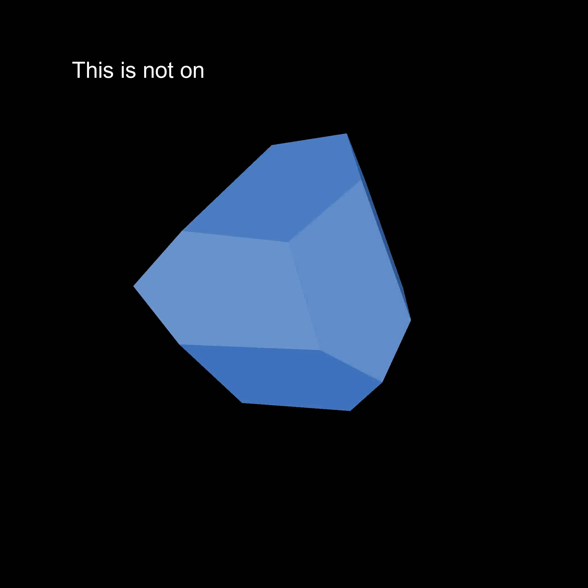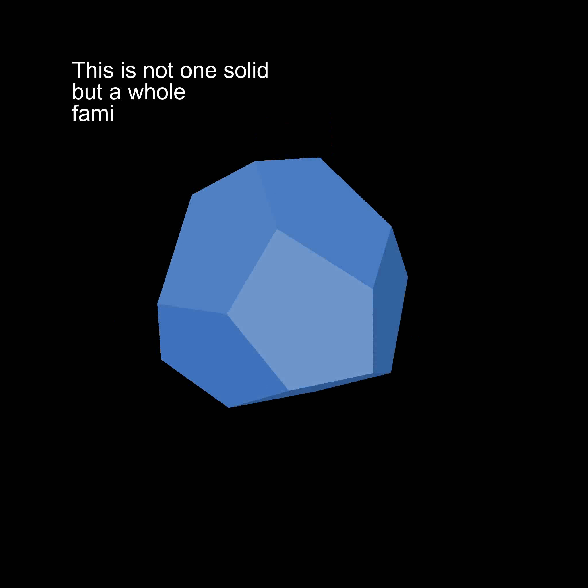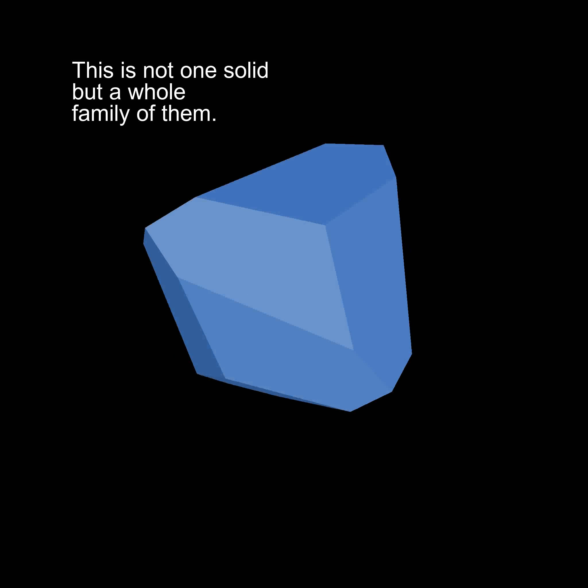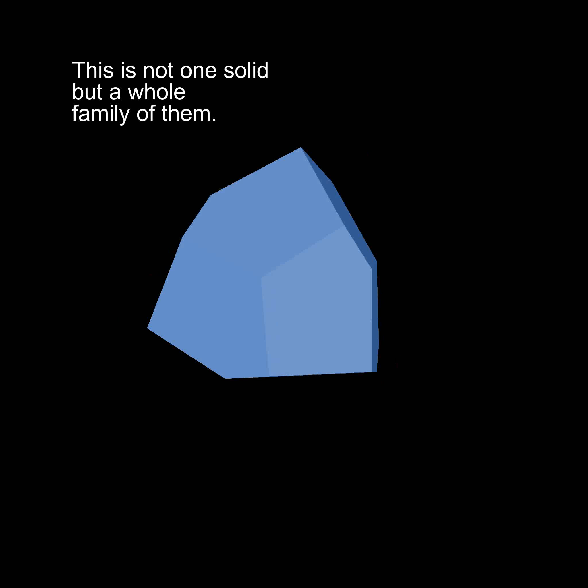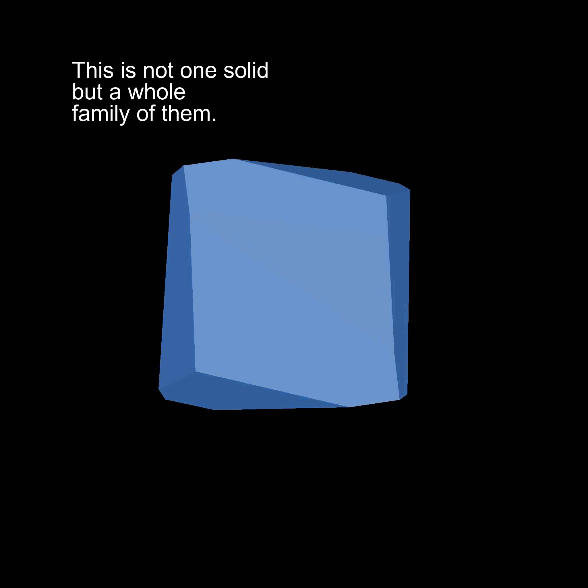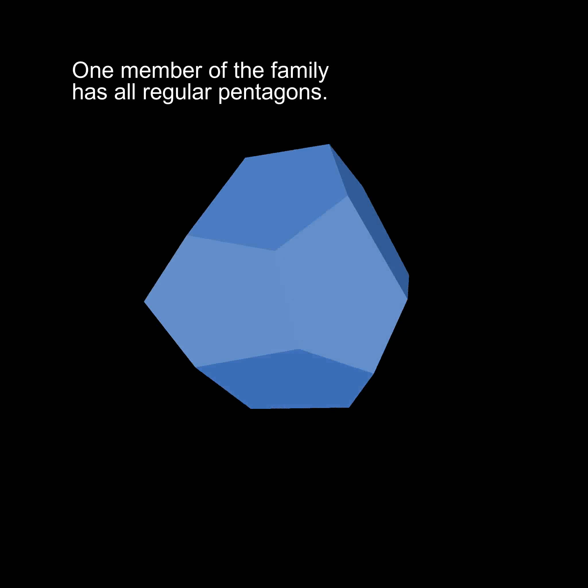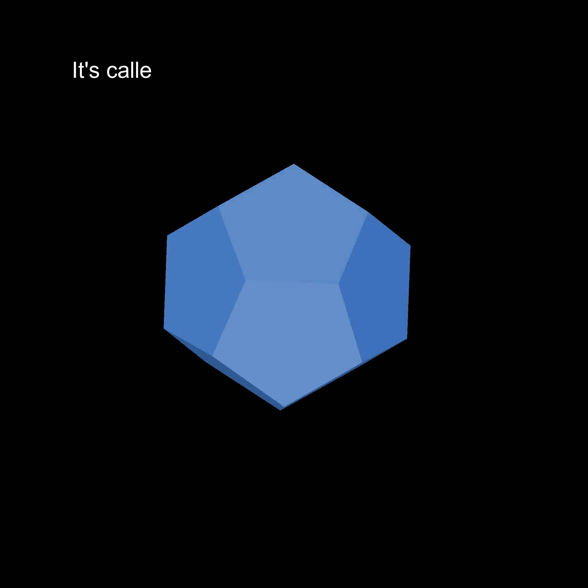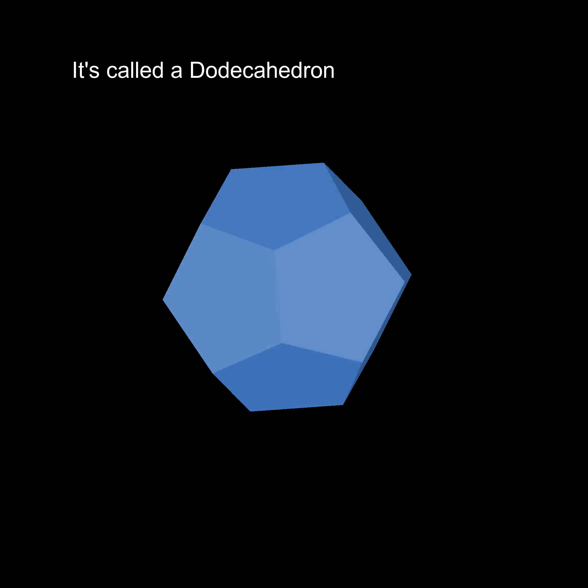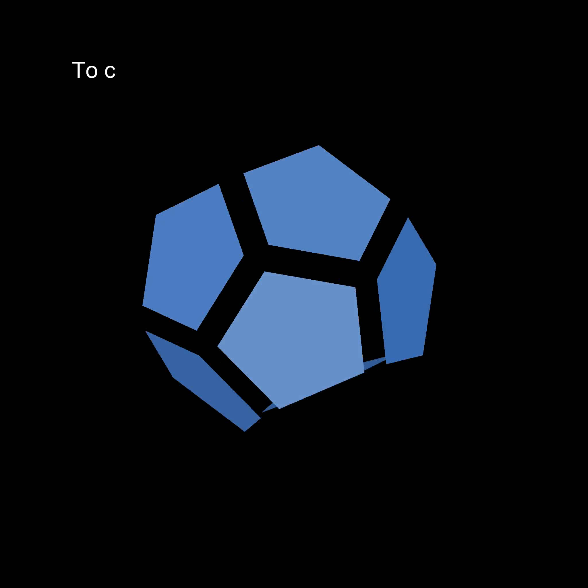Now this isn't one solid but a whole family of them, depending on the particular irregular pentagon making up the faces. And one particular member of the family has all its faces regular pentagons. And this is called the dodecahedron. It is a platonic solid with 12 faces.